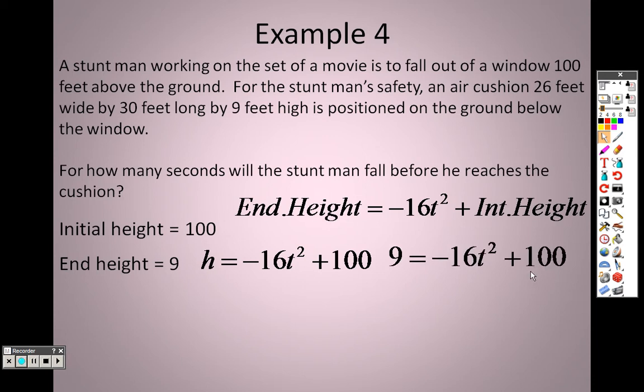So when I go to solve this to find all the like terms, I can actually move all the numbers onto this side, which ends up giving me a negative 91. I can take this negative 16 times t squared, and I can divide both sides by negative 16.